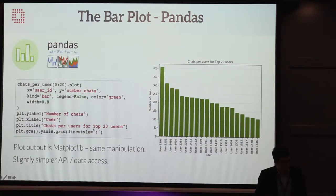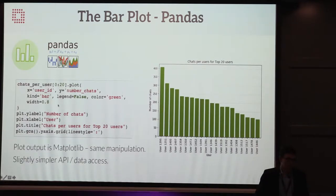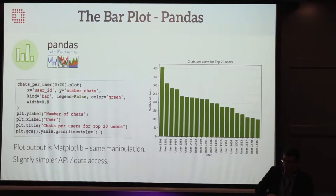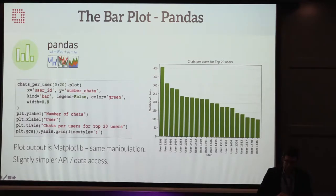In Pandas, it's essentially one line. You do chats_per_user, limit to the first 20 with an index slice, and just do dot plot with user ID on the x, number of chats on the y, kind equals bar. They've created almost the same chart but provided a wrapper to the bar function. And because it's a Matplotlib plot, you still use the same commands like plt.xlabel and plt.ylabel for labels. A little bit better, but to use the pandas plotting, you still need to know the Matplotlib functions for manipulation afterwards.